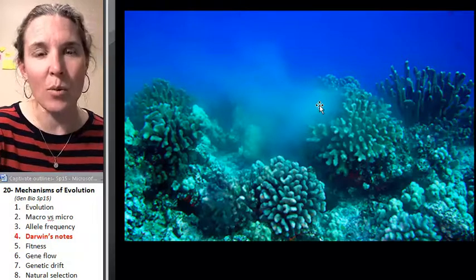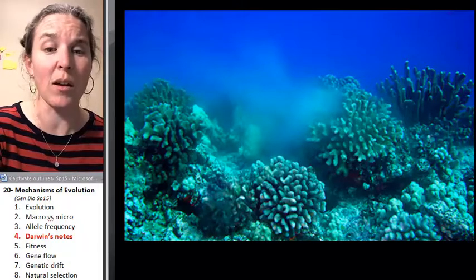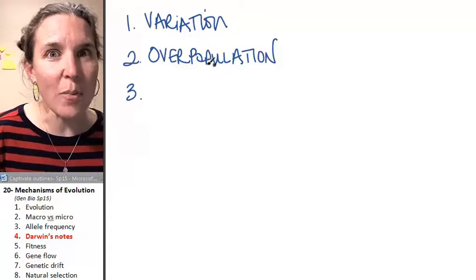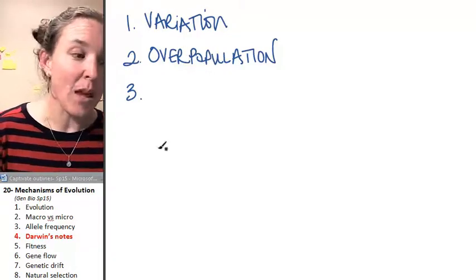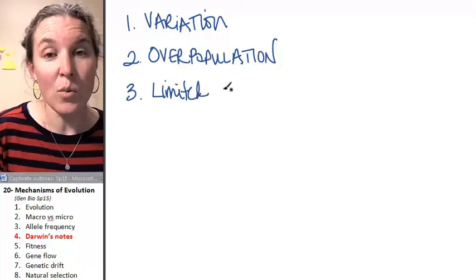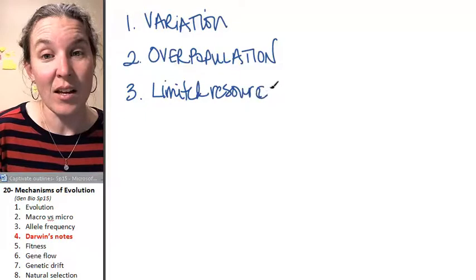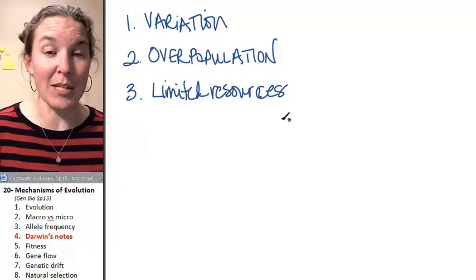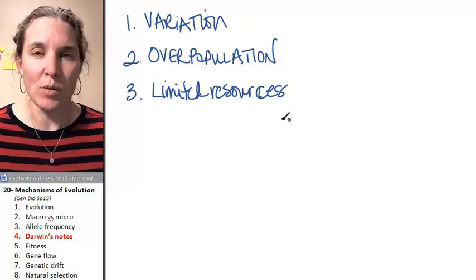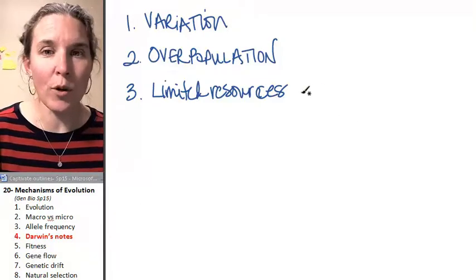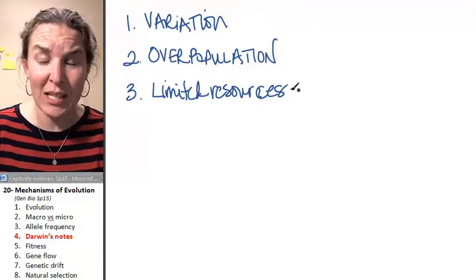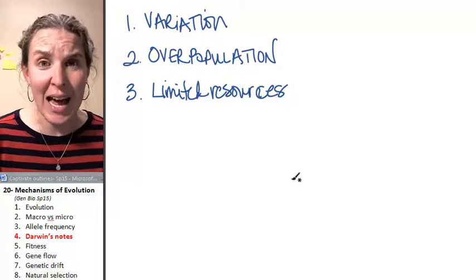Overpopulation — critters overpopulate. What was his third observation? They're all different, way too many of them are made, and there are limited resources. Think about it: eight billion baby sponges — is there enough room on the ocean floor for eight billion new sponges? Nope. Not enough room, not enough food. If eight billion really did survive, that's going to be a crazy scene.